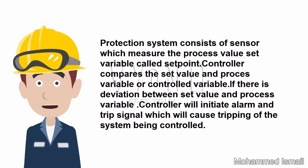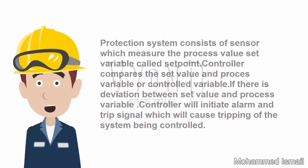The controller compares the set value and process variable, also called the controlled variable. If there is a deviation between the set value and the process variable, the controller will initiate an alarm and trip signal, which will cause tripping of the system being controlled.